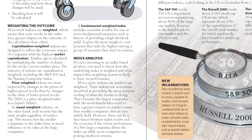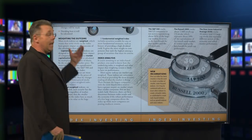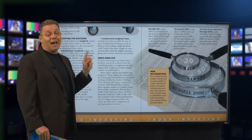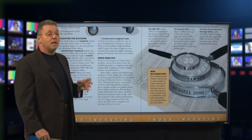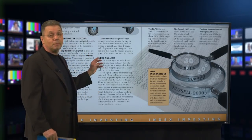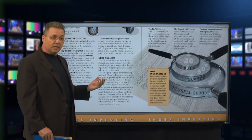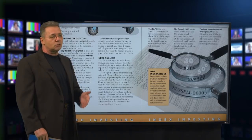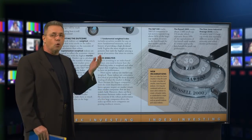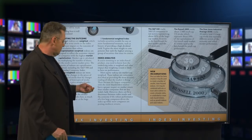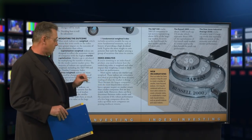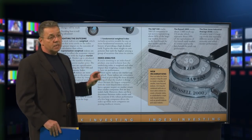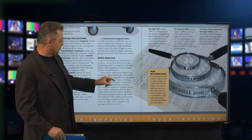Another consideration is index analysis. If you're investing in an index-based product, you need to know what the underlying index is weighted and the impact that weighting system is likely to have on performance. We care about how it affects performance. Whether I'm using it on an annuity, a life insurance contract, an index fund, or a mutual fund, I need a little bit of knowledge on this. Have your RIA or registered rep explain it to you.